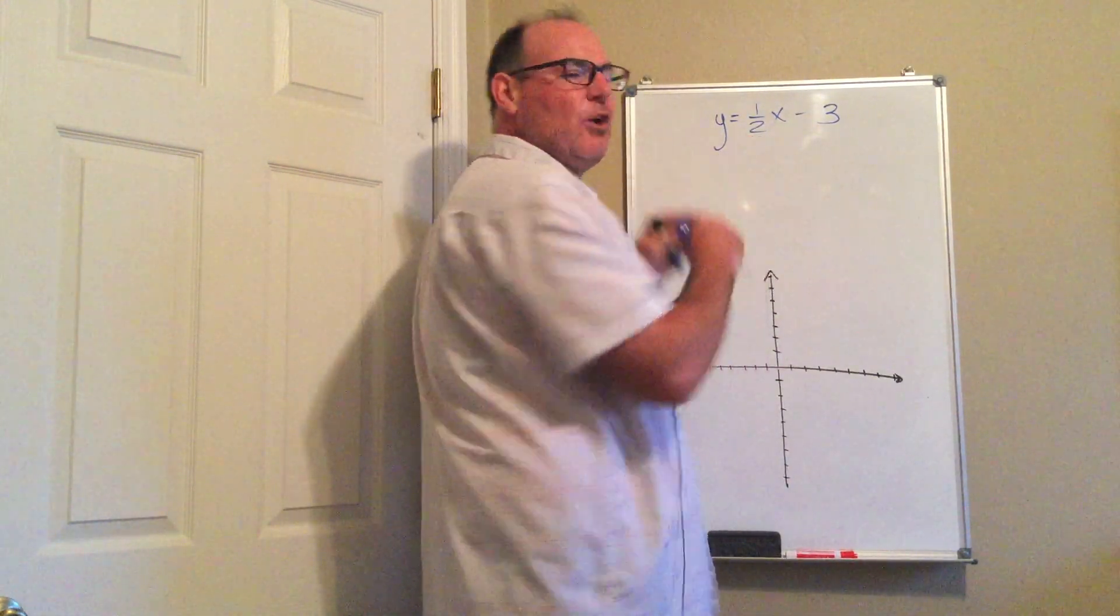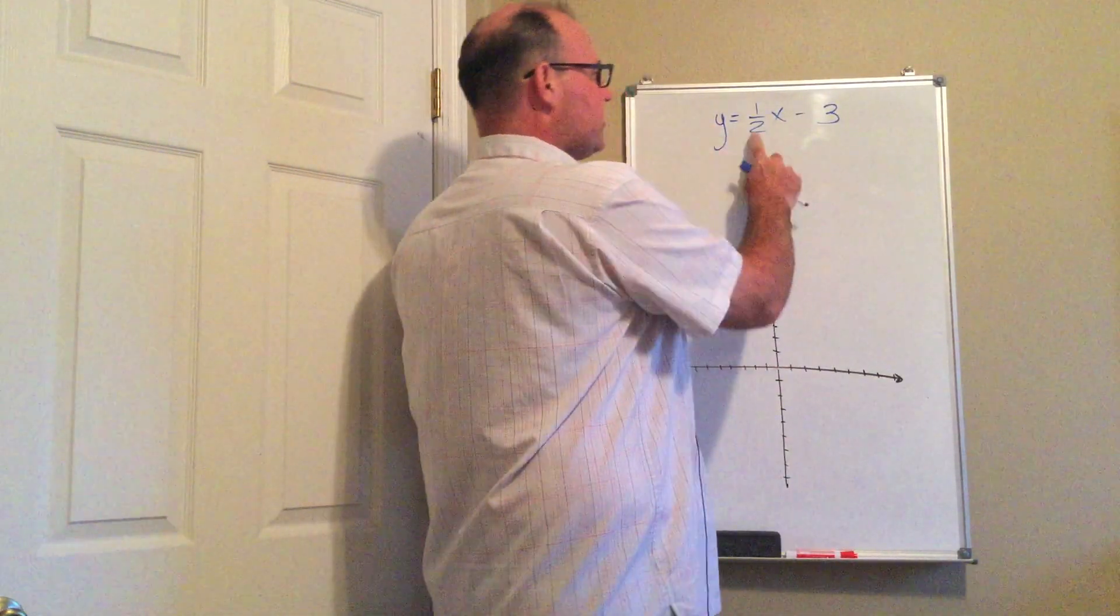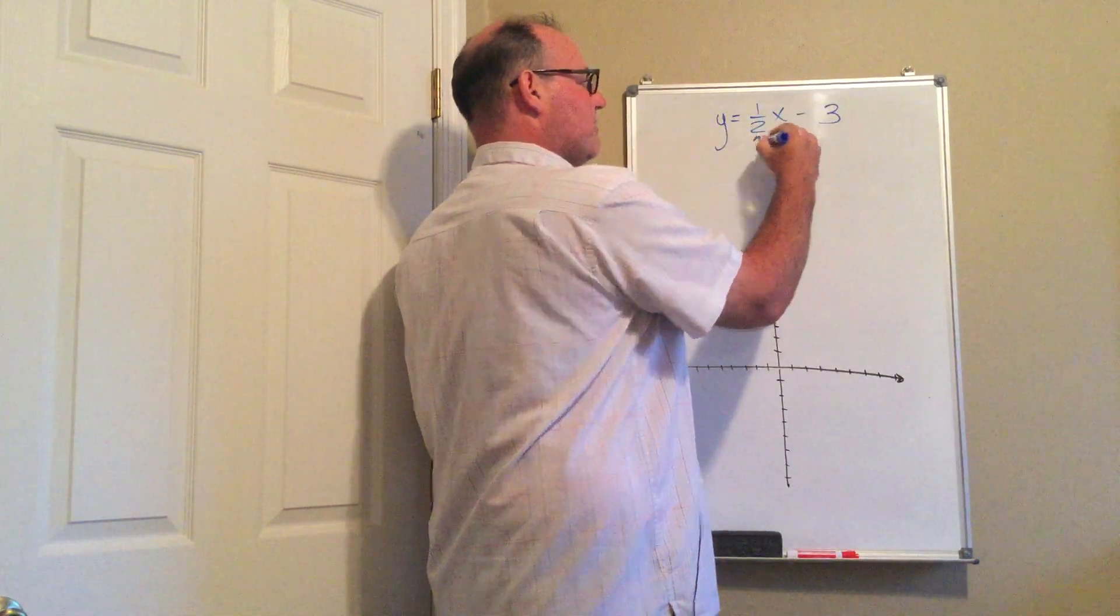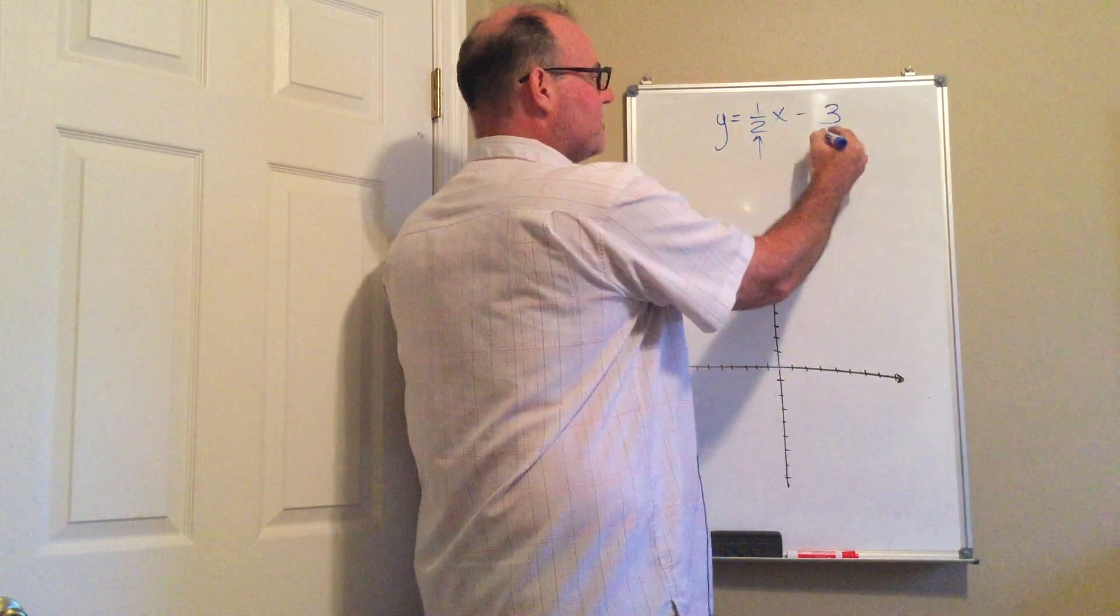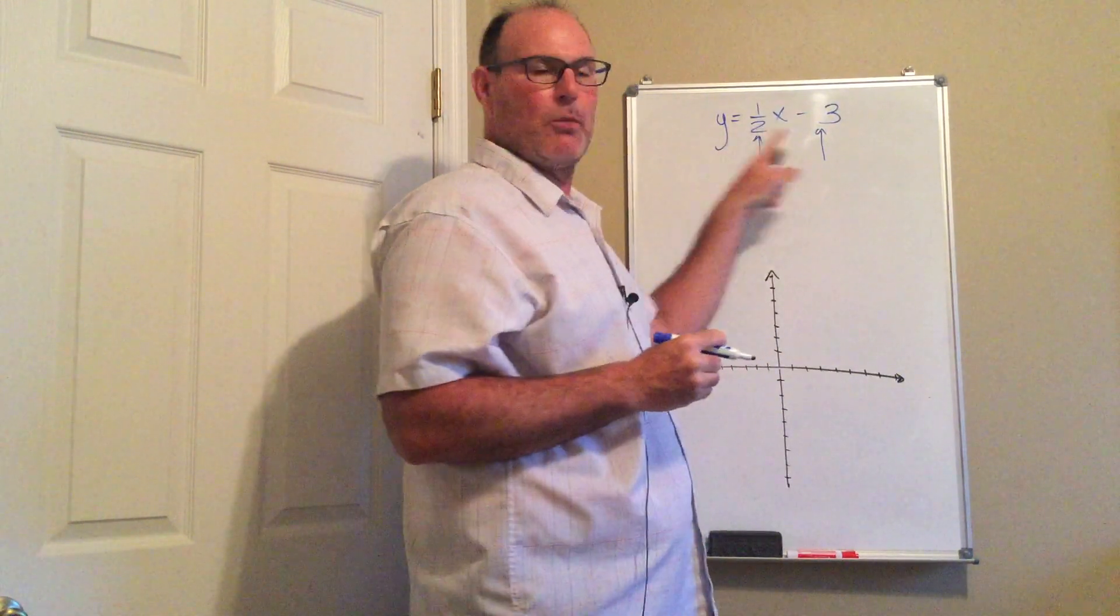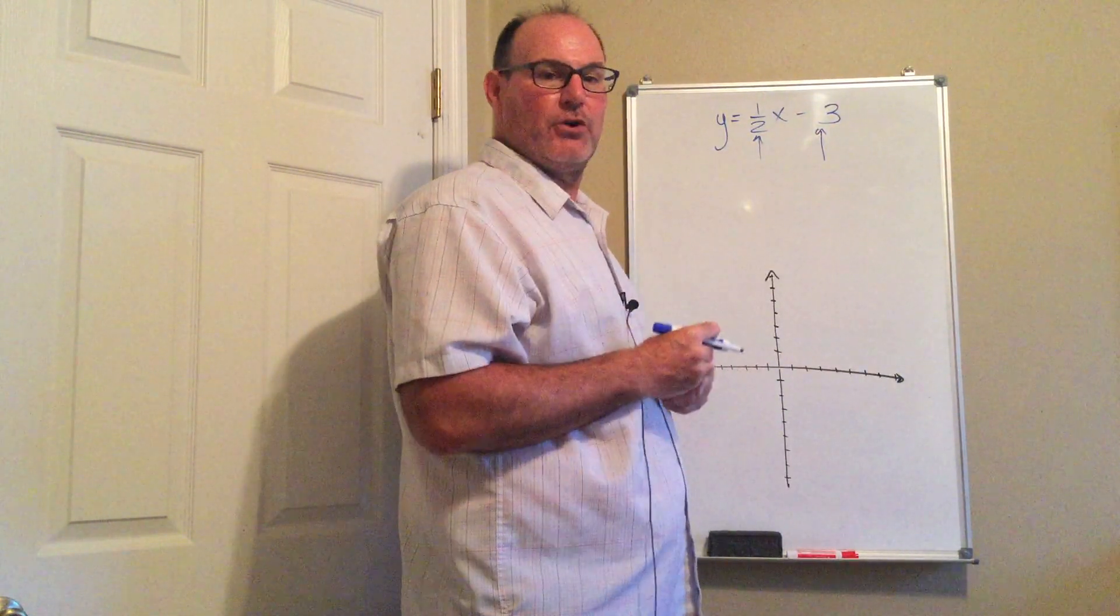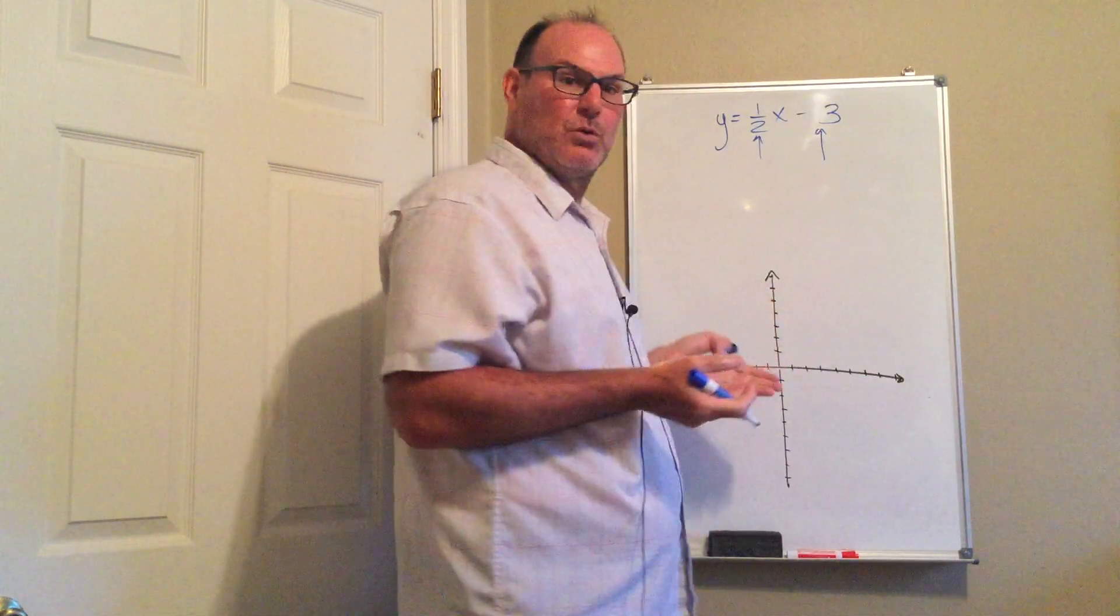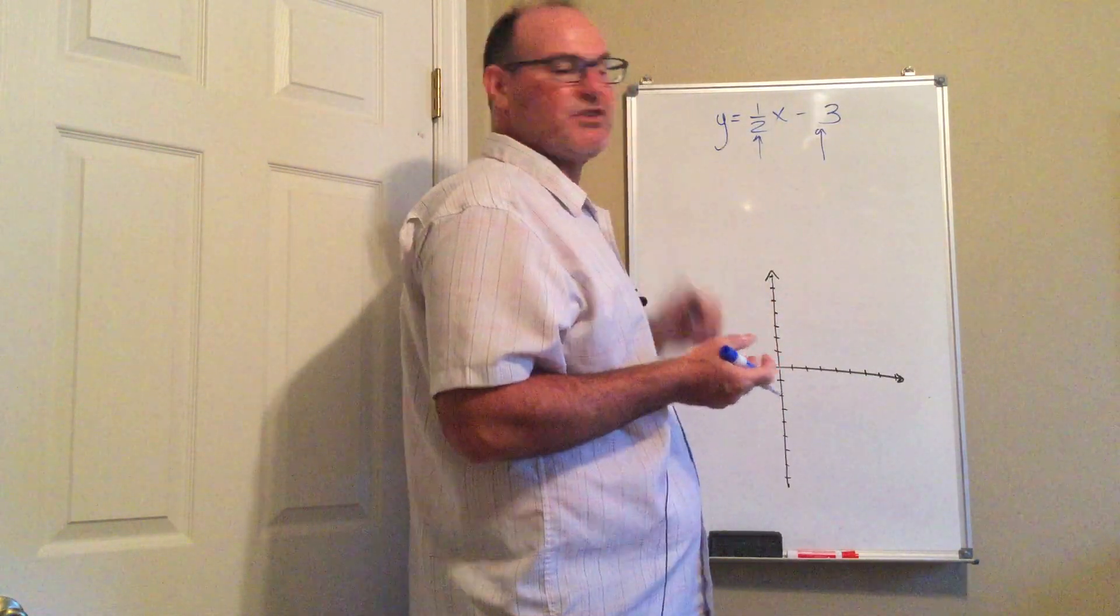So whenever you solve an equation for y, the slope is always going to be the number in front of the x and the y-intercept is the number either added or subtracted. This is called slope-intercept form. You may have heard of this before, y equals mx plus b. That's what's going on here.